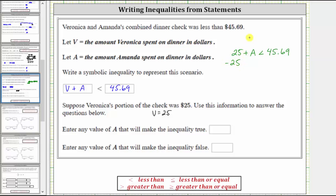We subtract 25 on the left, and subtract 25 on the right. And now we subtract. 25 minus 25 is zero. We now just have A on the left side of the inequality.